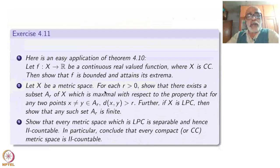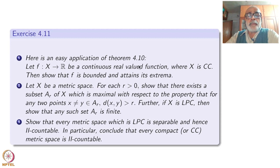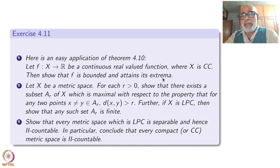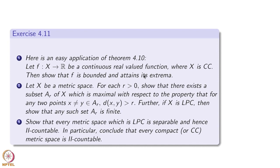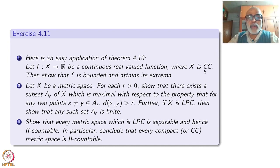Here are some exercises as easy applications of Theorem 4.10. Let f: X → R be a continuous real-valued function where X is countably compact. Show that f is bounded and attains its extrema. This is similar to what we remarked about Lebesgue property implying uniform continuity. Under compactness this is Weierstrass's theorem — any continuous function on a compact set to real numbers is bounded and attains its maximum and minimum. But countably compact is enough; no need for full compactness.